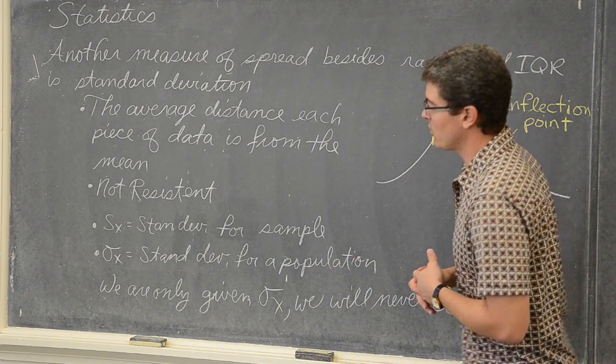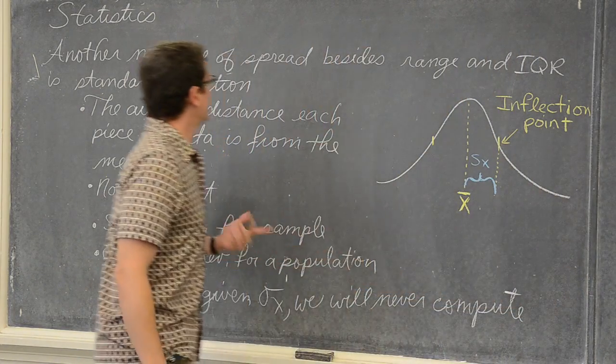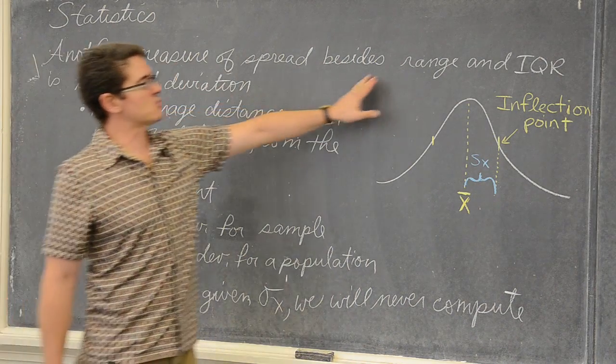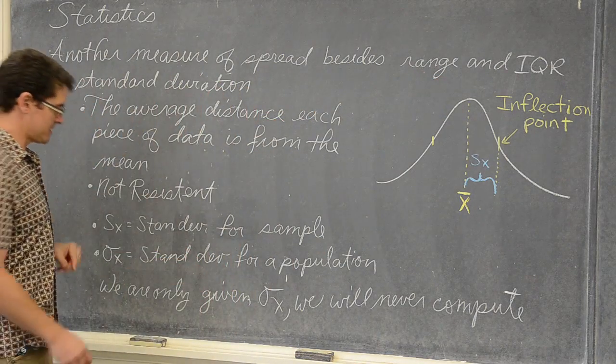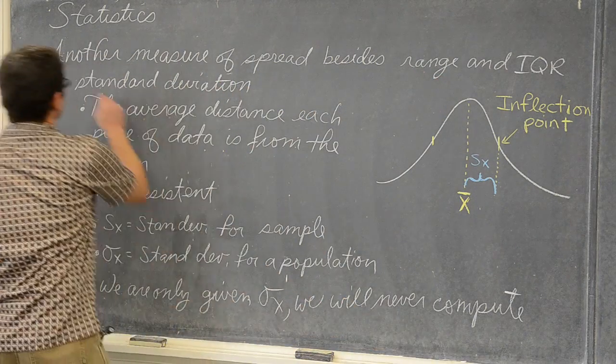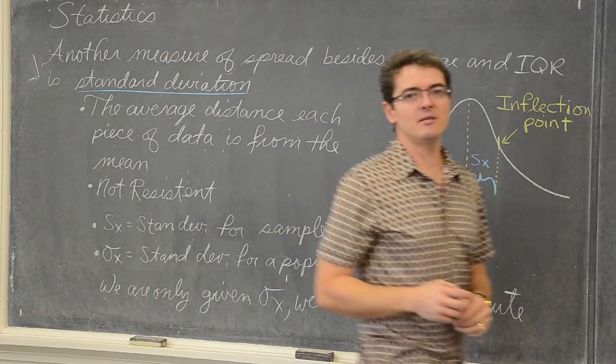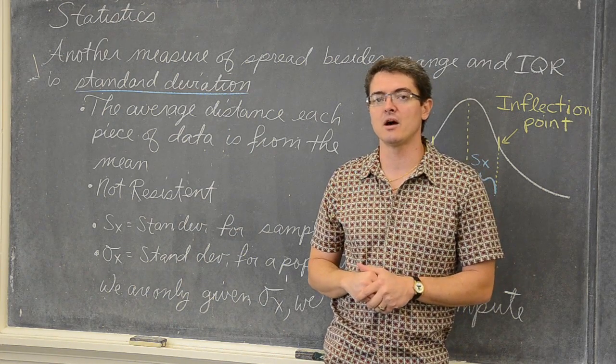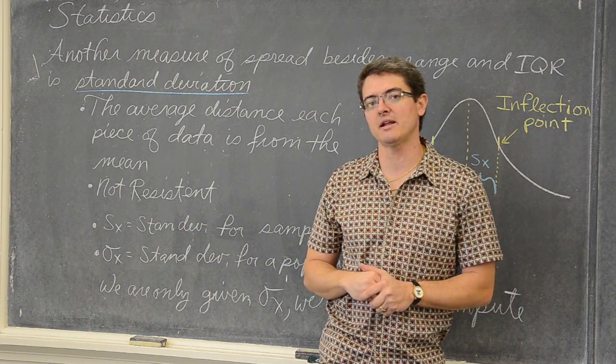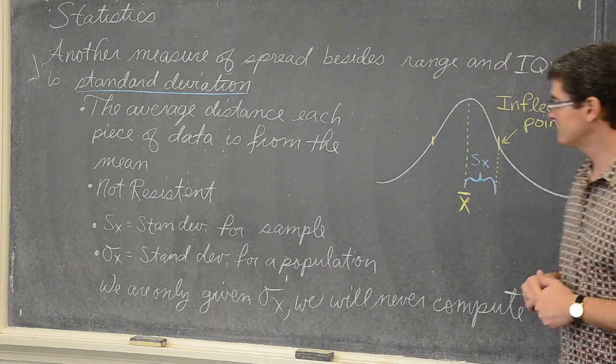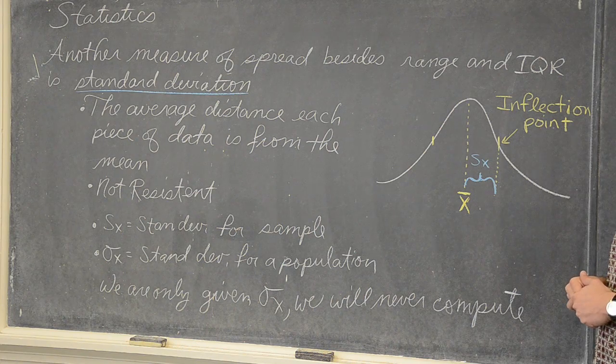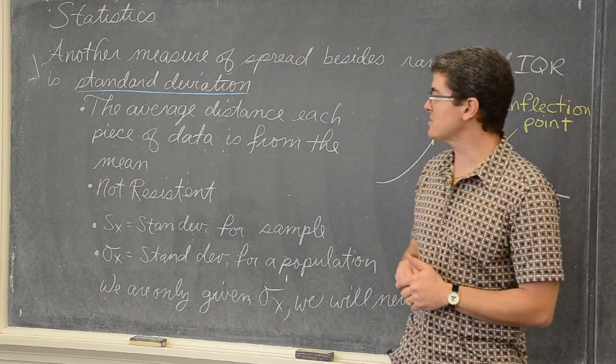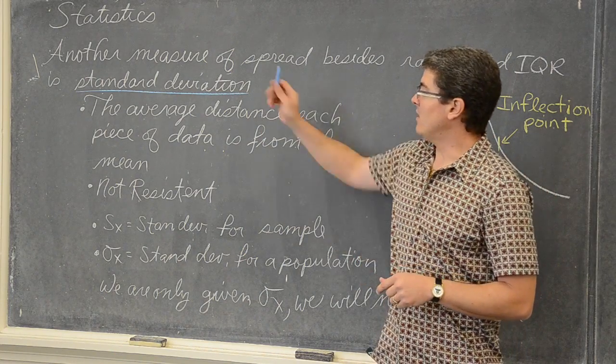I want to continue with what I said the other day, which was we have measures of spread that we use quite often. Besides what I have already talked about, another measure of spread besides range and IQR is standard deviation. This is by far the most commonly used measure of spread in statistics. Before I keep rambling on, let me pause for just a second and get out of your way so you can copy these down.